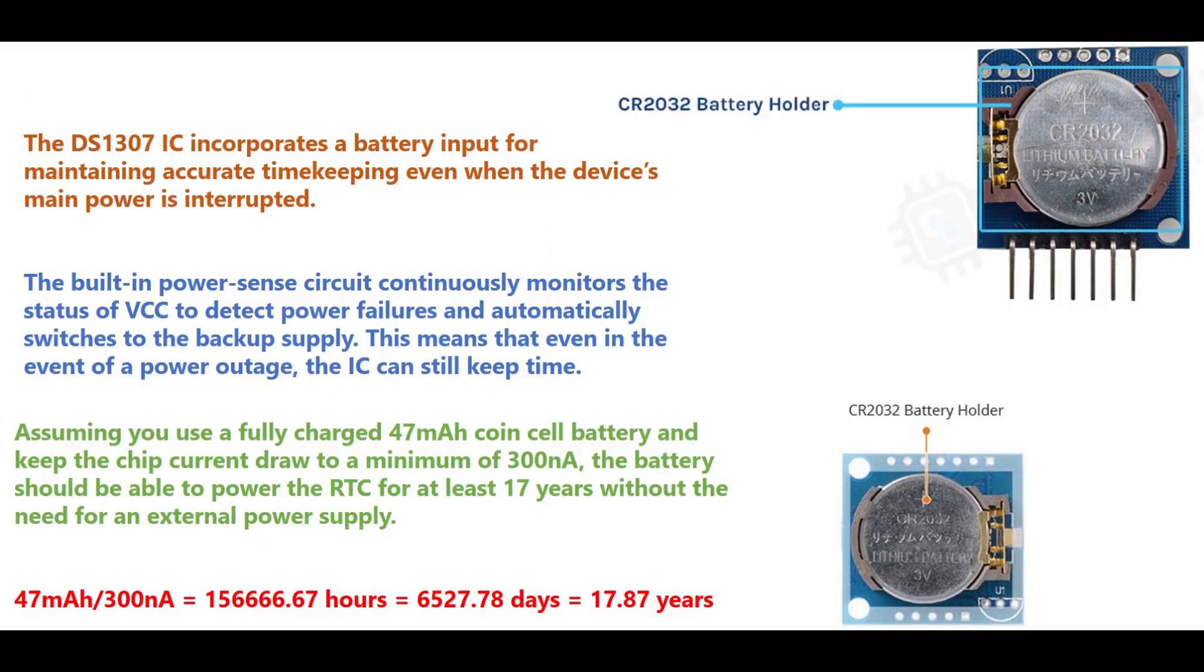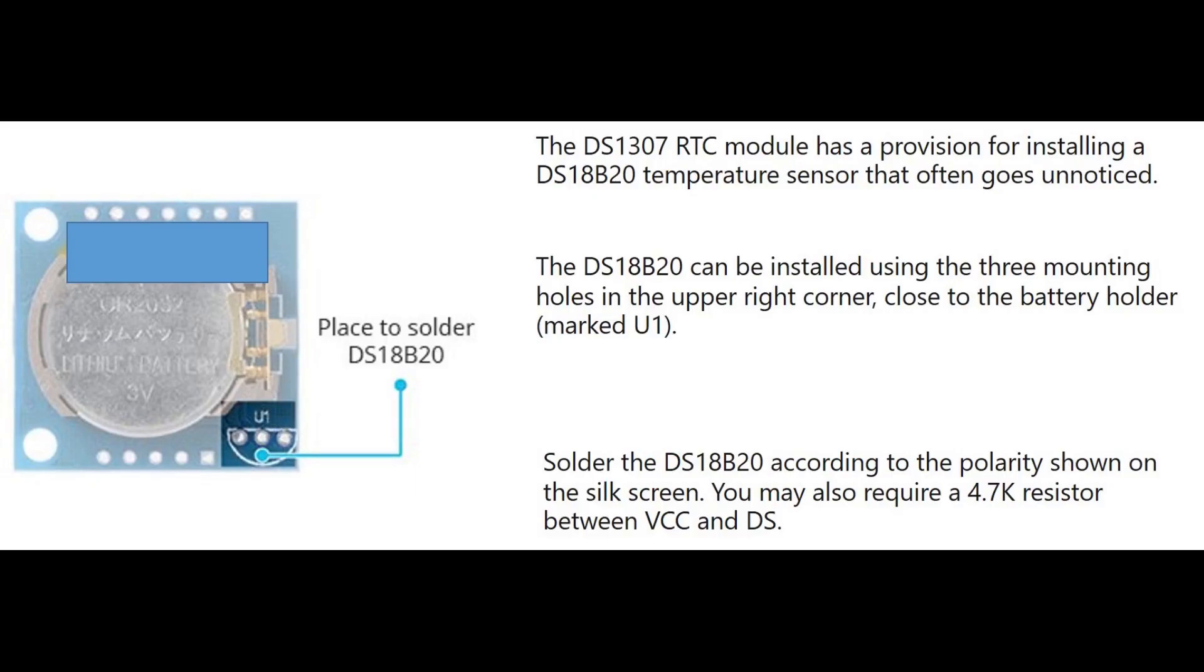The module provides details such as second, minute, hour, day of the week, day of the month, month, and year, including correction for leap year. One more interesting thing: it can operate either in 12 hours or in 24 hours format. It can be used in projects containing data logging, clock building, time stamping, timers, and alarms.